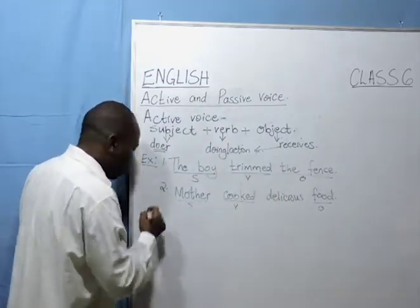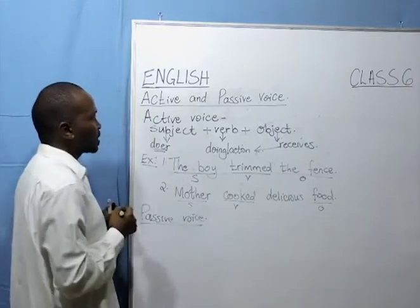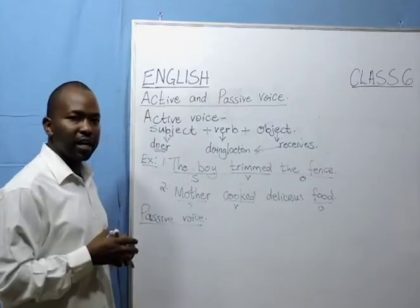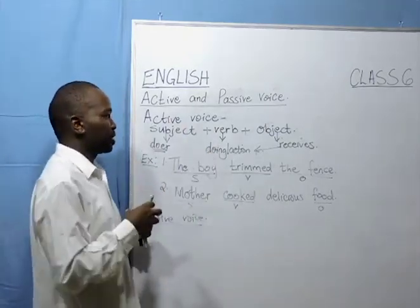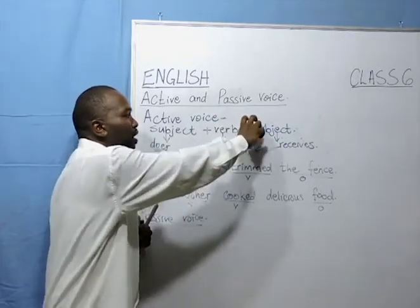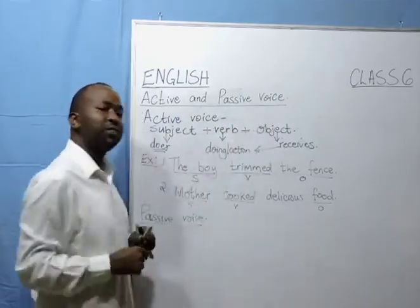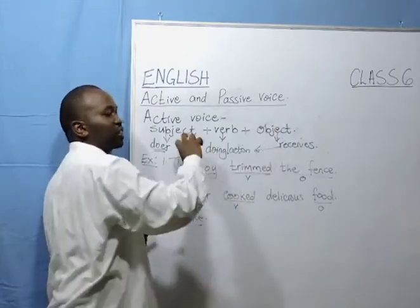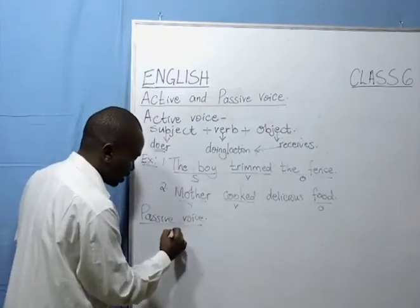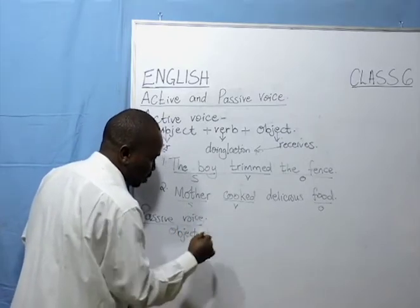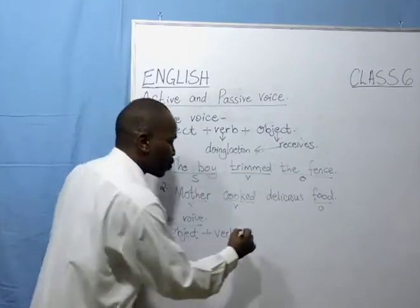Now let's look at the passive voice. What is the passive voice? The passive voice refers to where the order in the sentence changes — the order in which we structure sentences changes. Now, instead of starting with the subject, then the verb, followed by the object, we are going to interchange the places of the object and the subject. So now our sentence will start with the object, followed by the verb, and if necessary — though it is not a must — you can put the subject.